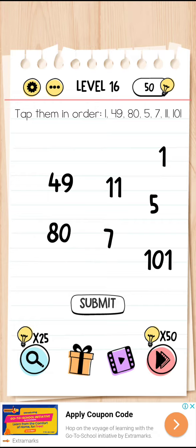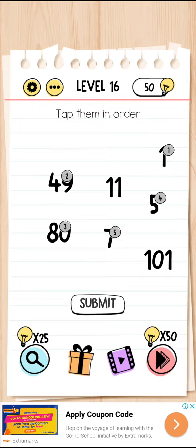So you need to remember the numbers coming after 1. We can simply see that 1, 49, 80, 5, 7, 11, 101. So this was the correct order I guess: 1, then 49, then 80, then 5, then 7, then 11, then 101.